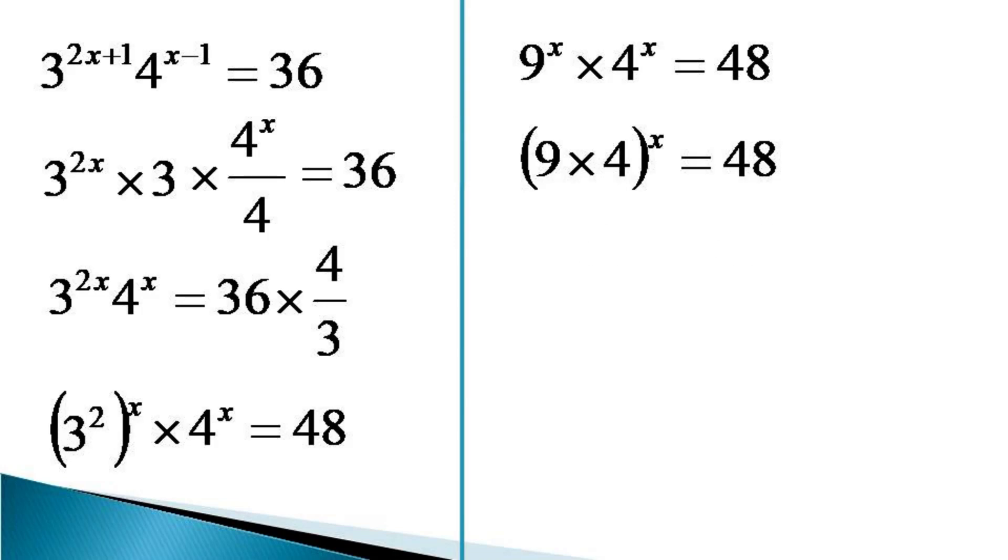This can also be represented as 36 raise to the power x is equal to 48. The value of x from this equation can be isolated only by taking log. So, we take log of both the sides and the resulting equation is ln 36 raise to the power x is equal to ln 48.